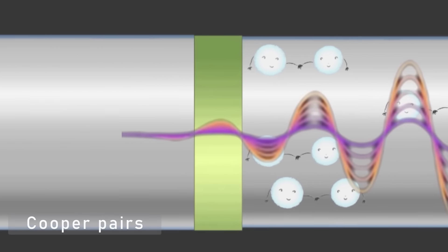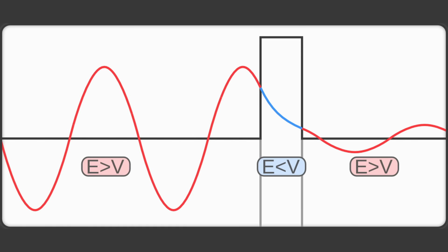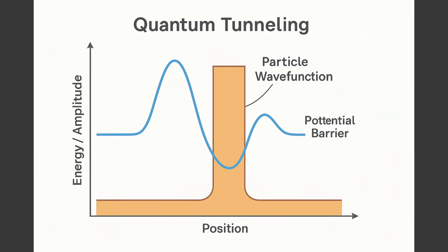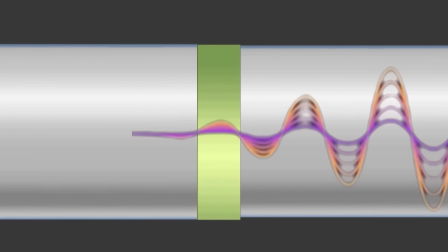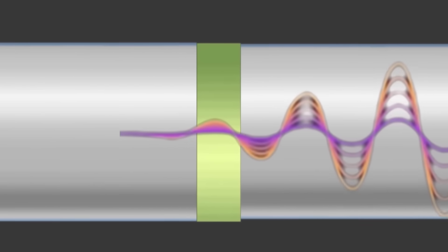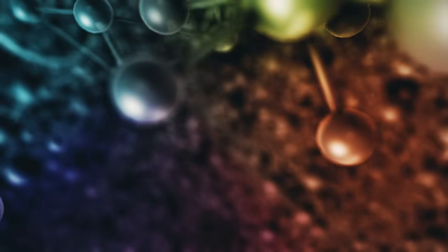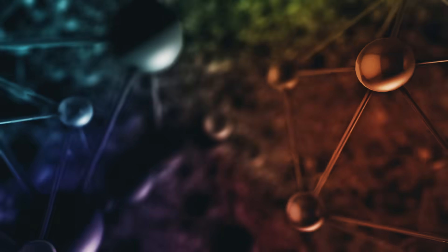This collective wave can tunnel right through the insulating barrier, connecting both sides in perfect coherence. The result is a quantum system that behaves like a single, unified entity, a macroscopic wave of millions of electrons, oscillating in harmony.